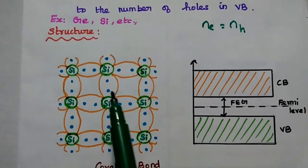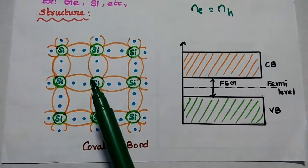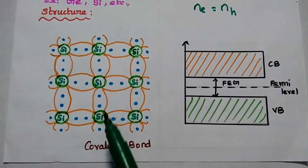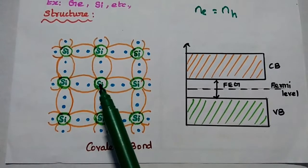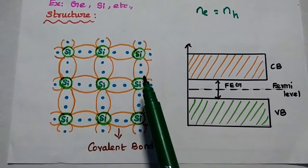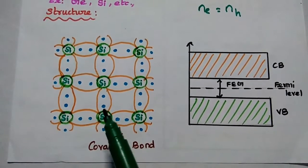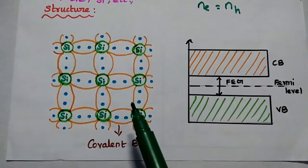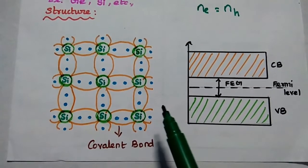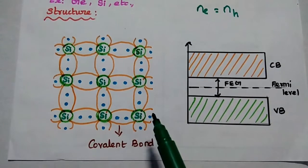Let's discuss the structure of the intrinsic semiconductor. Considering silicon atoms, each atom has 4 valence electrons in its outermost orbit. The valence electrons are tightly coupled with the parent atom and also through covalent bonds with the other atoms. There are no free electrons in this structure, so the semiconductor material cannot conduct. Therefore, intrinsic semiconductor acts as an insulator at 0 Kelvin.